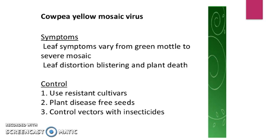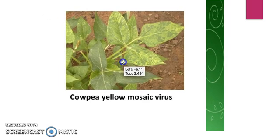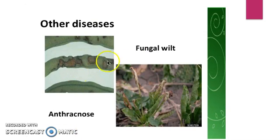The cowpea yellow mosaic virus has symptoms that include leaves varying from green mottle to severe mosaic, leaf distortion, blistering, and plant death. You can control this by the use of resistant cultivars, planting disease-free seeds, and controlling vectors with insecticides. Here is a picture of how the discoloration looks in the cowpea yellow mosaic virus.